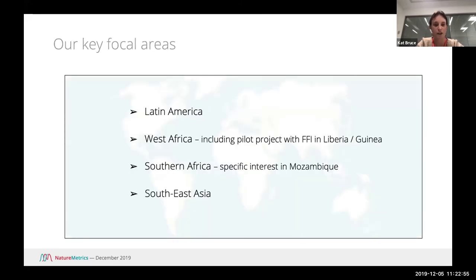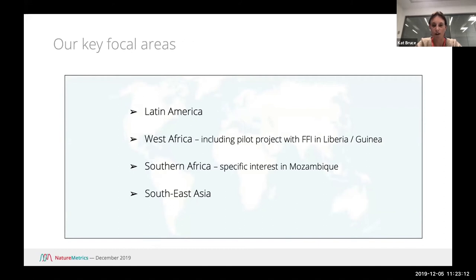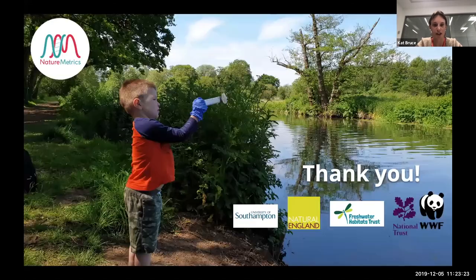Especially for fish, this is becoming a very well-validated survey method, ready for use as long as limitations are understood. It doesn't have any more limitations than any other survey method, I would argue. The ability for anybody to take samples — people who are in an area for a different purpose can be collecting biodiversity samples at the same time — is a real advantage. Our real focus beyond Europe is on projects around the tropics. We have regional coordinators now in place for Latin America, West Africa — including a pilot project with FFI looking for pangolins in Liberia and Guinea — Southern Africa, and Southeast Asia.